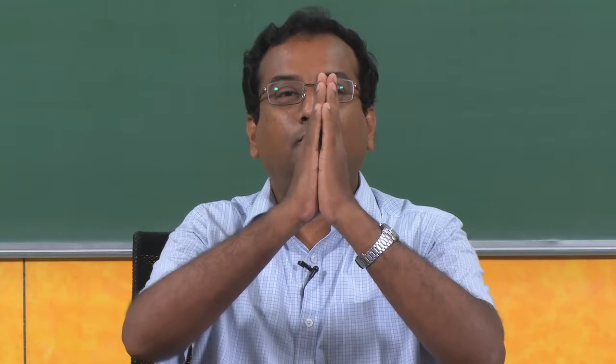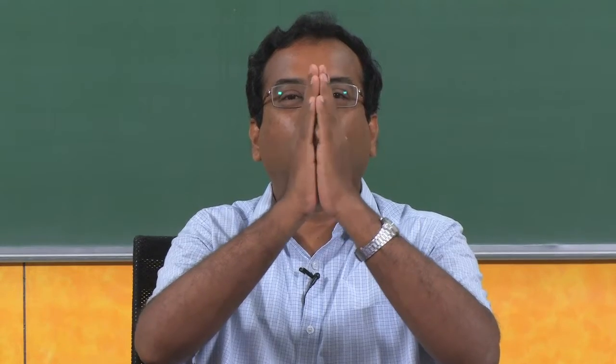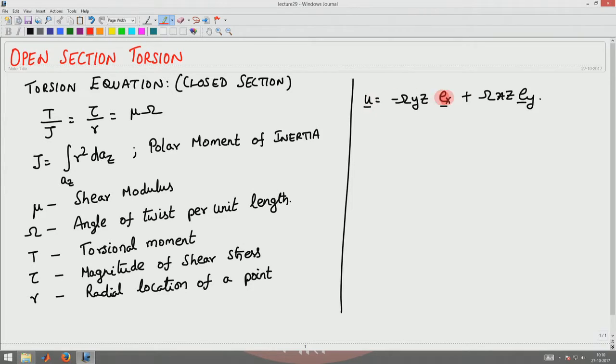Basically we said that two surfaces because of twisting will rotate relative to each other and there will not be any out of plane displacement. With that assumption we came up with the displacement field.